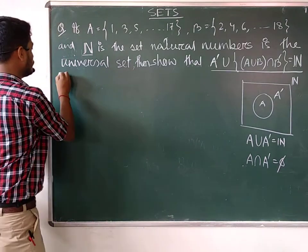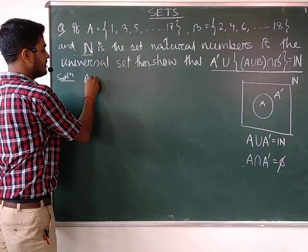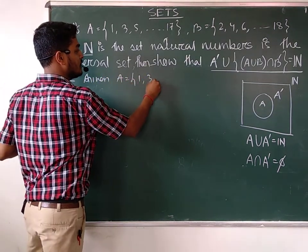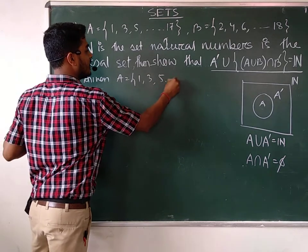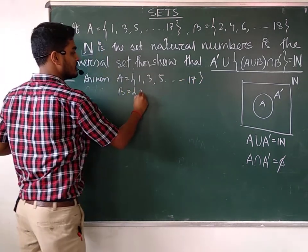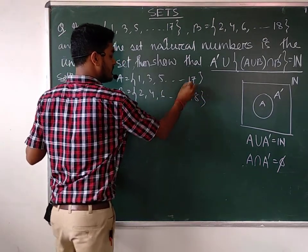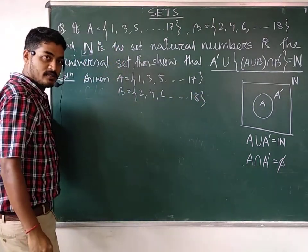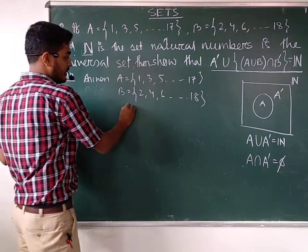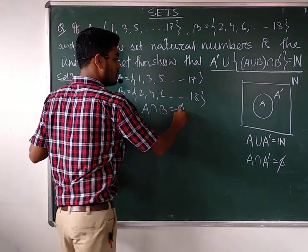So let's show you this one and start. A is the set which contains 1, 3, 5 up to 17. And B is the set which contains 2, 4, 6 up to 18. In set A, all odd numbers are there, and in set B, all even numbers are there. Then A intersection B is equal to phi — no elements are there.